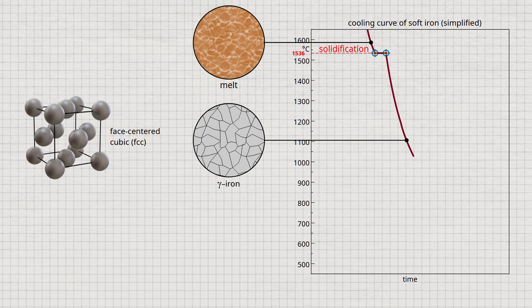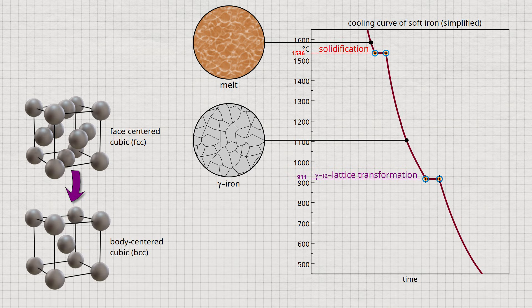In this state, the iron is also known as gamma iron. If the completely solidified gamma iron is cooled further, a lattice transformation takes place at 911 degrees Celsius due to allotropy. The face-centered cubic iron is transformed into a body-centered cubic lattice structure.